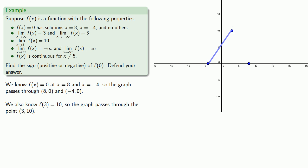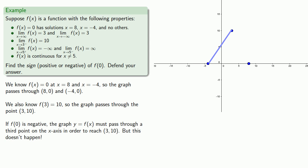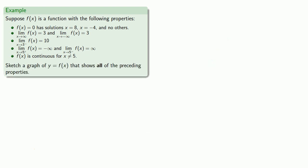So we can state: if f of 0 were negative, the graph y equals f of x would have to pass through a third point on the x-axis to reach (3, 10). But that doesn't happen, so f of 0 must be positive. This allows us to sketch a graph of y equals f of x that shows all of the preceding properties.